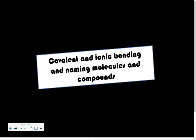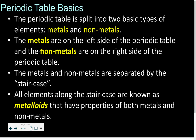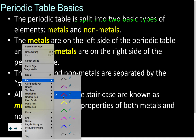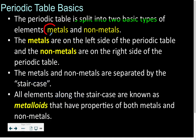In order to begin with covalent and ionic bonding, we have to go back to the periodic table and look at the two major types of elements found there, because that's how you're going to identify the type of bonding. The periodic table is split into two basic types of elements: metals and non-metals.